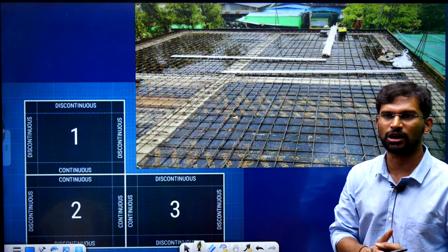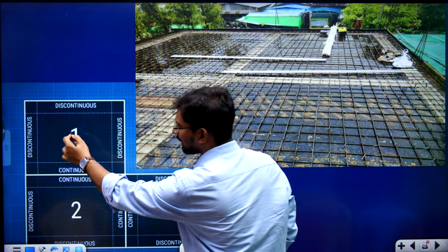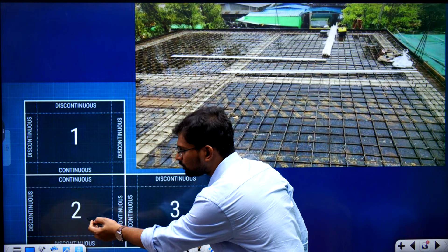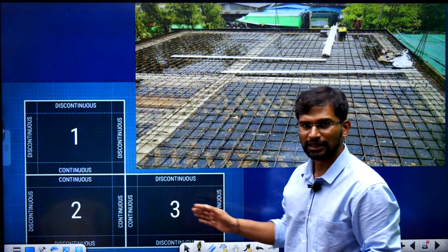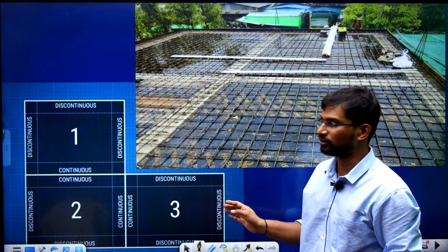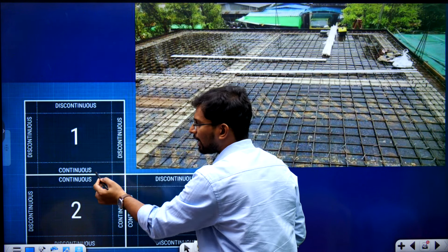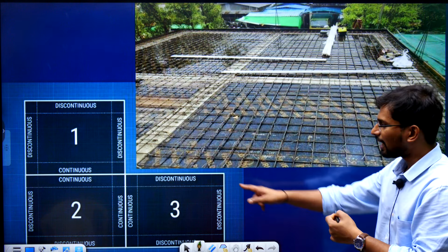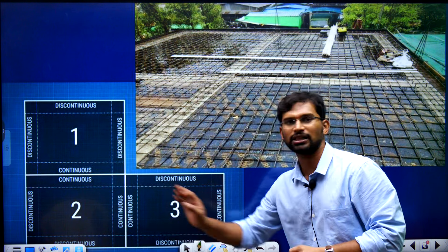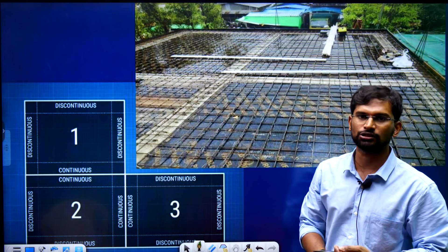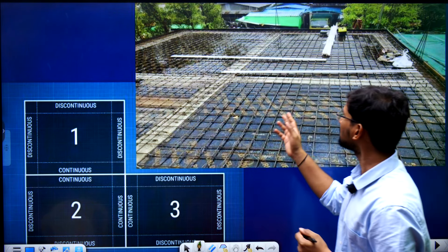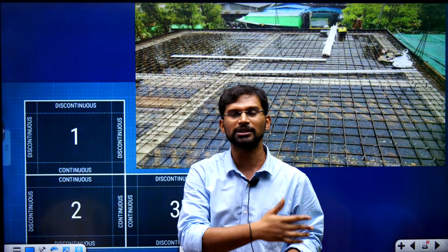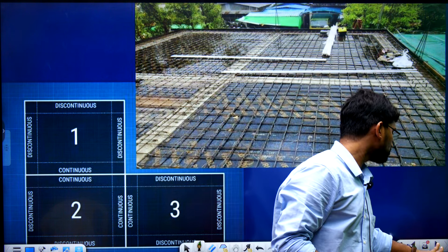Just as we discussed continuous beams, there are also continuous slabs. We observe multiple slabs — for example, 3 slabs. Depending upon the continuity of the slabs, we consider continuous slabs. If you observe, you have beams in four corners and a slab in the middle. So, in major construction, we have continuous beams and continuous slabs automatically.